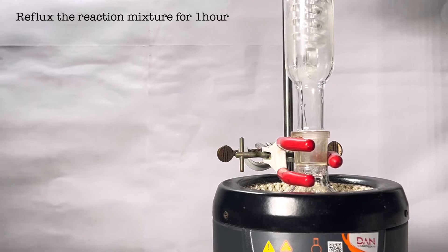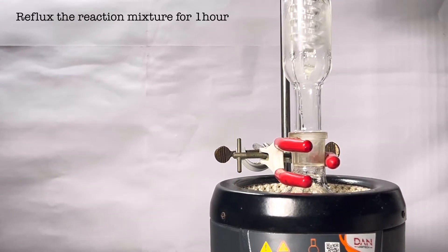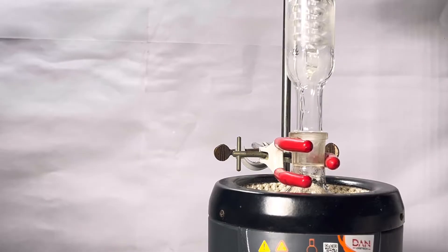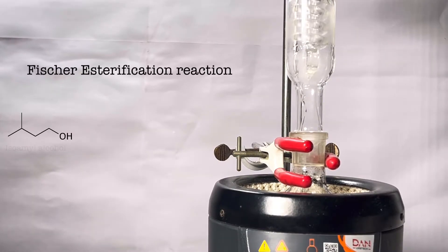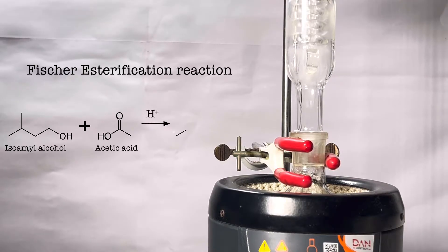Let us see the reaction occurring here. This synthesis proceeds via the classic Fischer Esterification reaction. Isoamyl alcohol reacts with acetic acid in the presence of sulfuric acid to form isoamyl acetate.